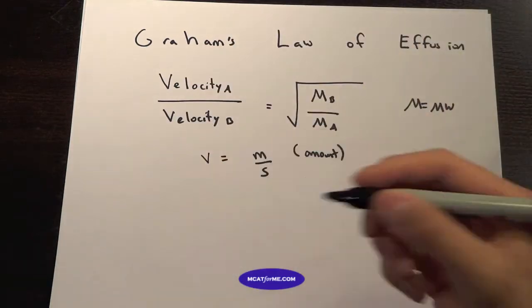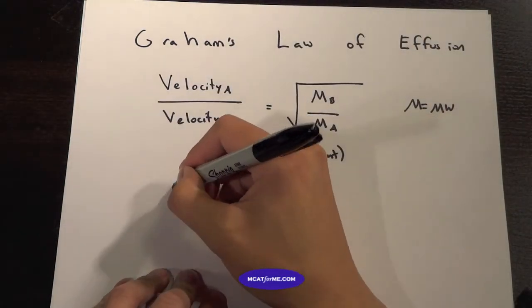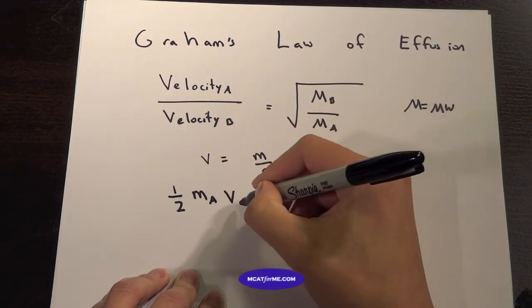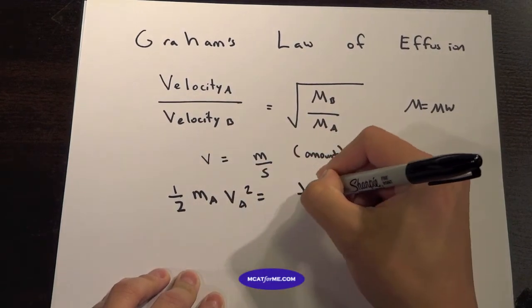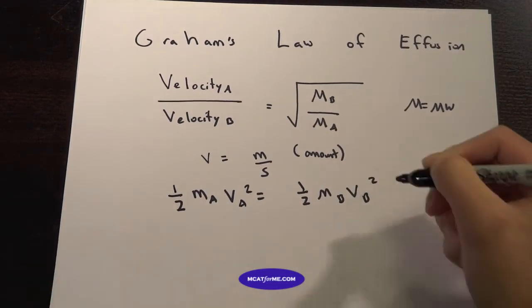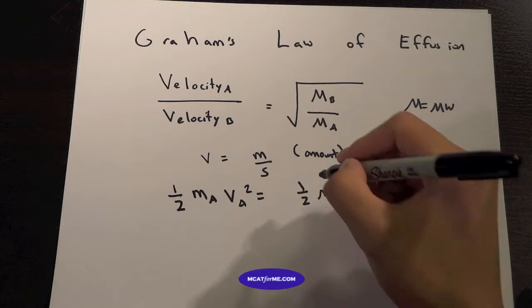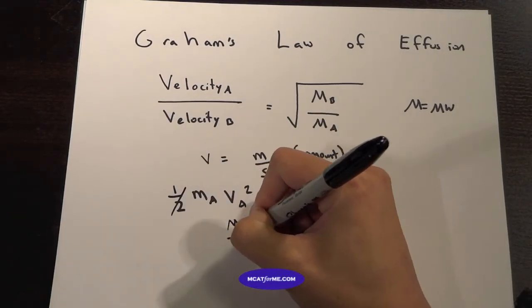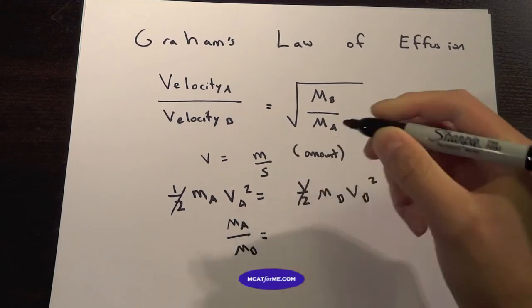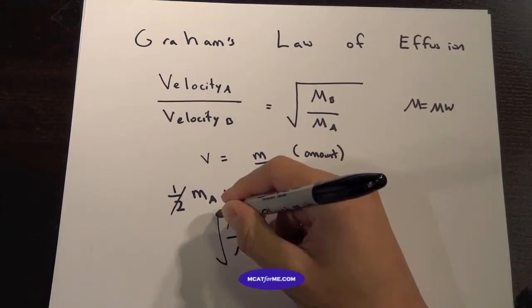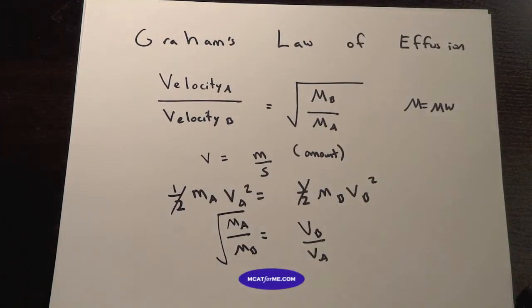But if you can't memorize this, there's a way so you don't have to. We get the kinetic energies of both. We say that the kinetic energies are equivalent to each other, then we move them both onto one side. And that's how we get this equation right there.